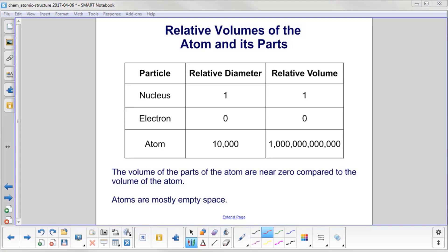An electron has very small diameter compared to a nucleus, so it has a relative volume of 0. Now the atom compared to the nucleus is 10,000 times as wide.